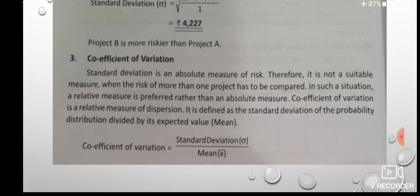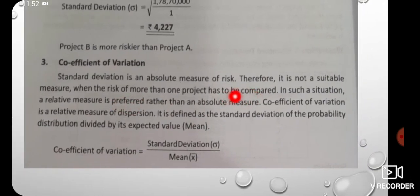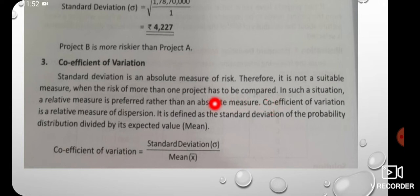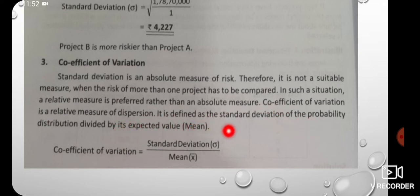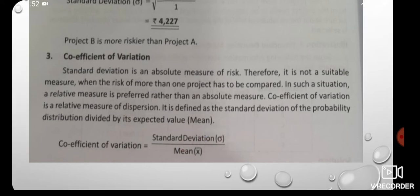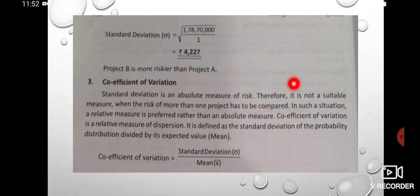Now, the coefficient of variation. Standard deviation is an absolute measure of risk. Therefore, it is not suitable to measure risk when more than one project has to be compared. In such a situation, a relative measure is preferred over the absolute measure. That is why the coefficient of variation is better. It is defined as the standard deviation of the probability distribution divided by its expected value or mean. The formula is: standard deviation divided by mean equals the coefficient of variation.